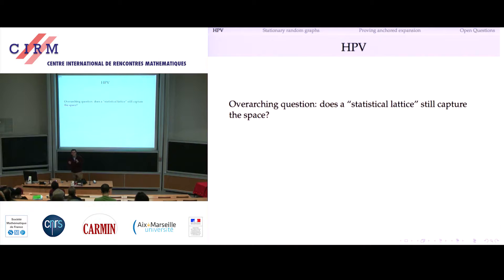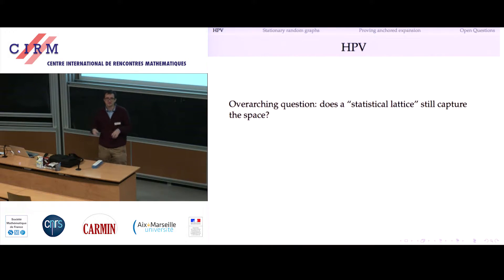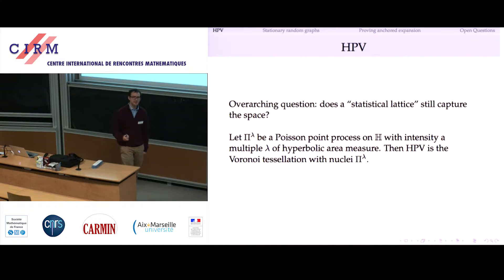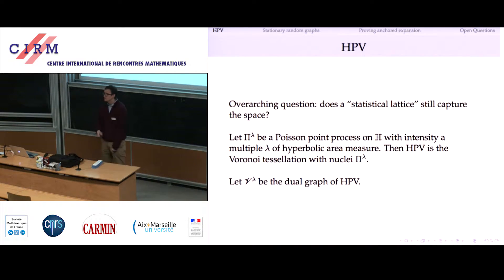I'm going to introduce a statistical lattice — that's the hyperbolic Poisson Voronoi tessellation. The question is: does it copy the same properties? If you take non-amenability from the space, does the hyperbolic Poisson Voronoi tessellation also have non-amenability? I won't try to define exactly what a statistical lattice should be — that's something I would like to do, but there's still work to do. At the very least, the definition is that you build the Voronoi tessellation with nuclei coming from a homogeneous Poisson process, with intensity given by an invariant measure on the manifold. I'll write V_lambda for the dual graph of this tessellation — that's the Delaunay graph.